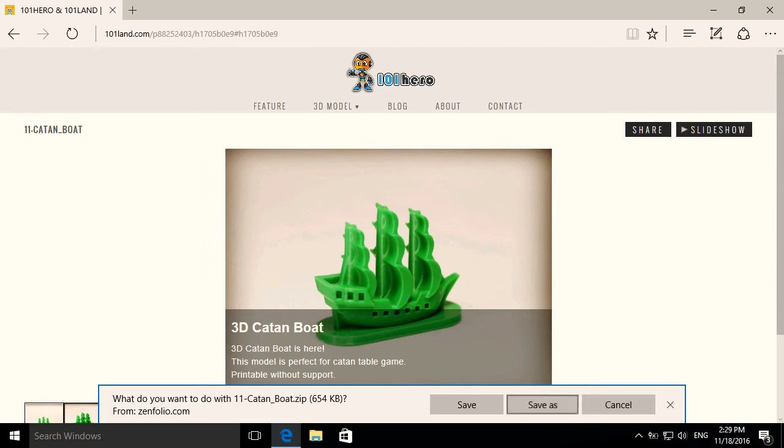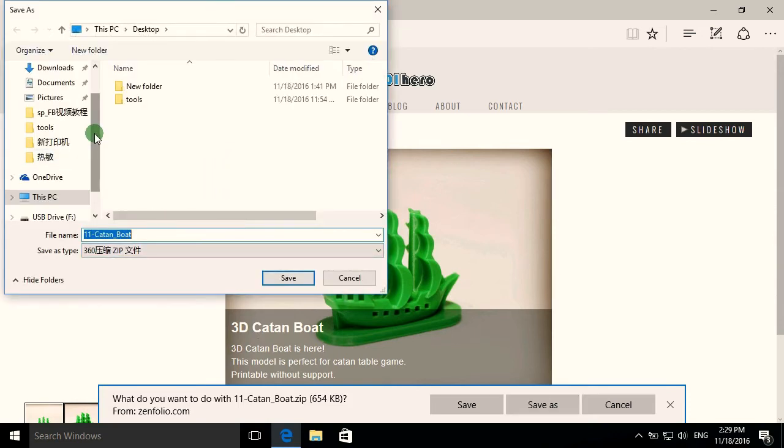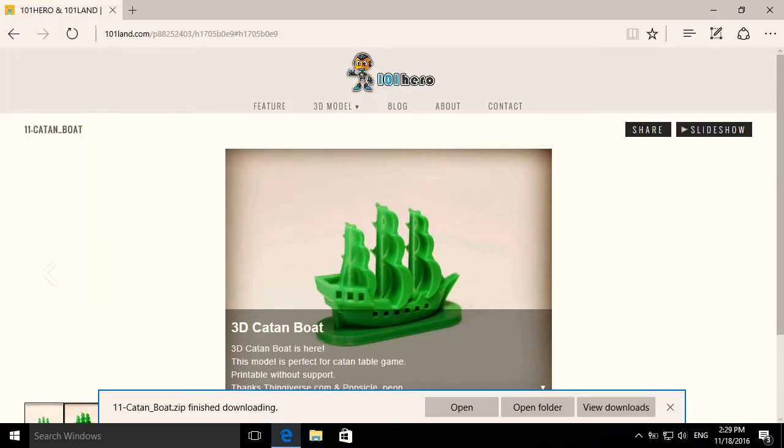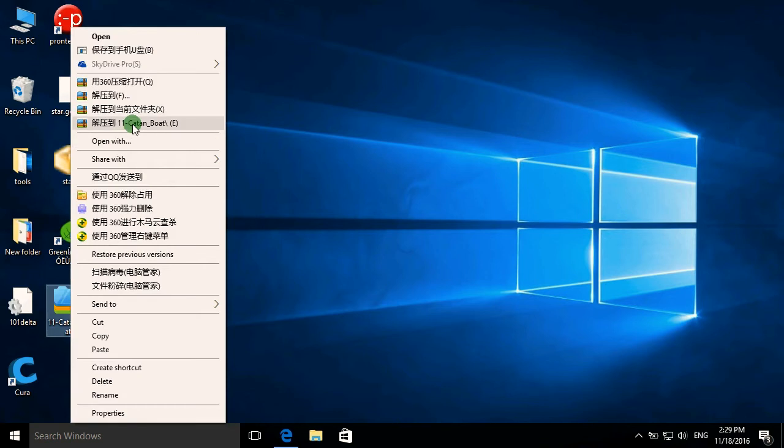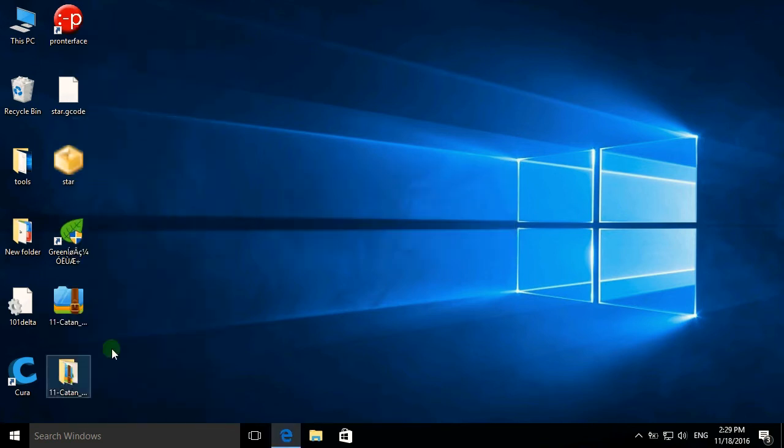To save this object, click on save as. Choose the desktop and click save. Now let's choose open folder. Go back to the desktop and zip it.